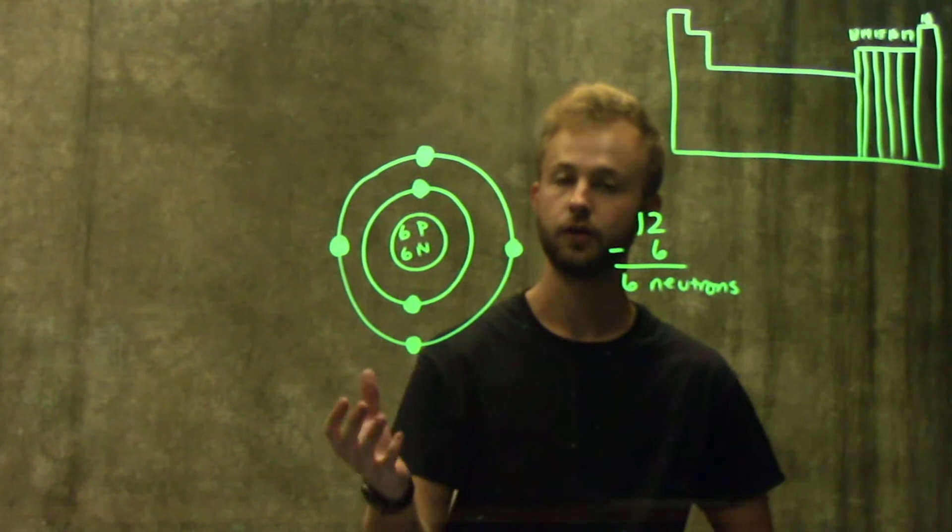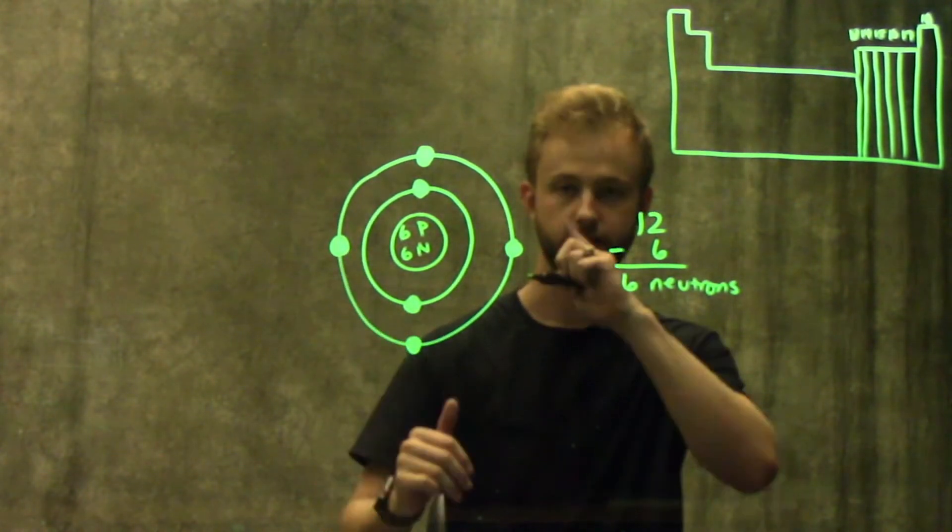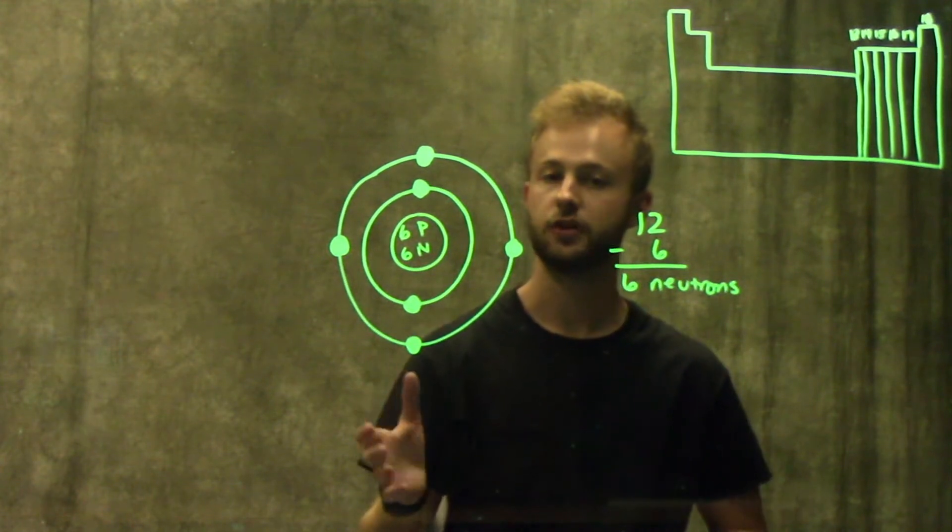Carbon has four valence electrons, which means that it can form four bonds with other molecules. If you don't have time to draw out the Bohr model,